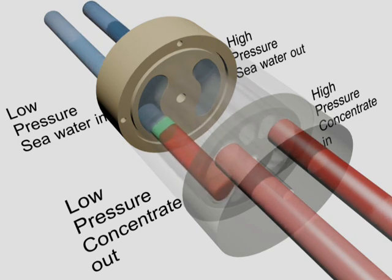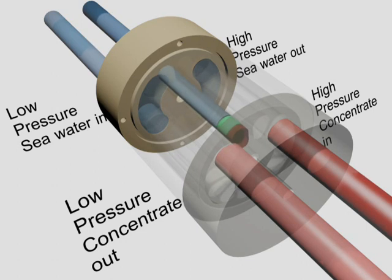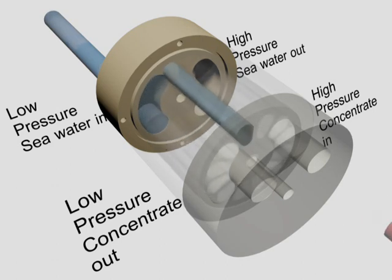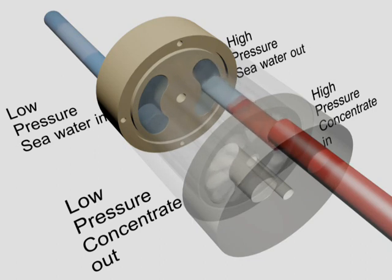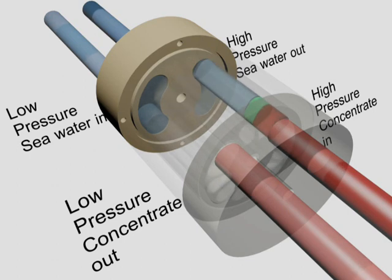The ducts of the rotor function like a carousel, charging and discharging as the pressure transfer process repeats itself. Water in the narrow gap around the rotor, which serves as a lubricant, is continuously replaced and refreshed. Mixing between the concentrate and seawater is minimal because the exposure time is so short.